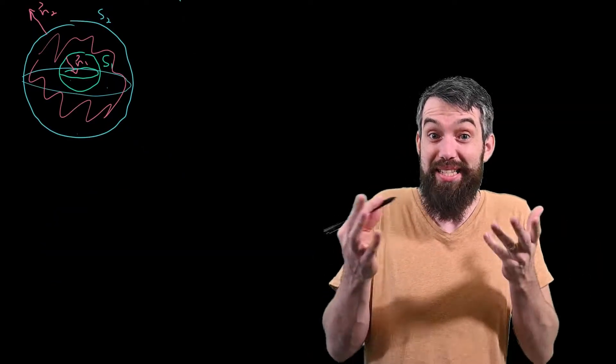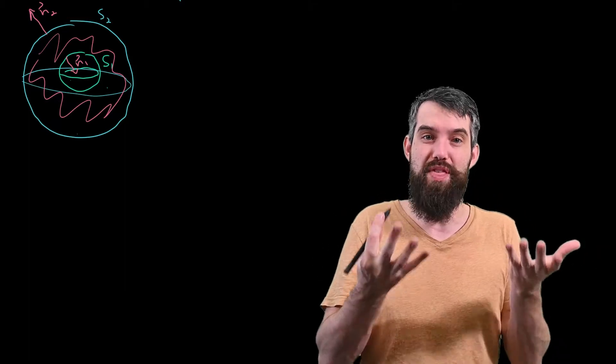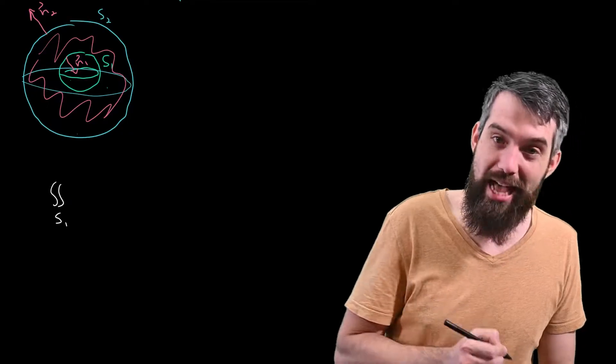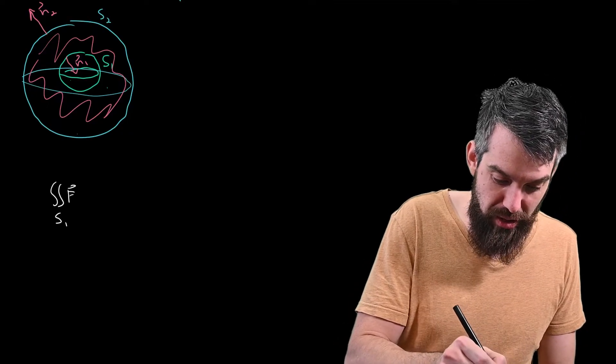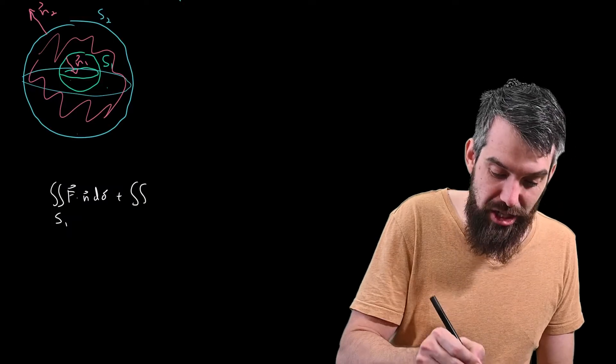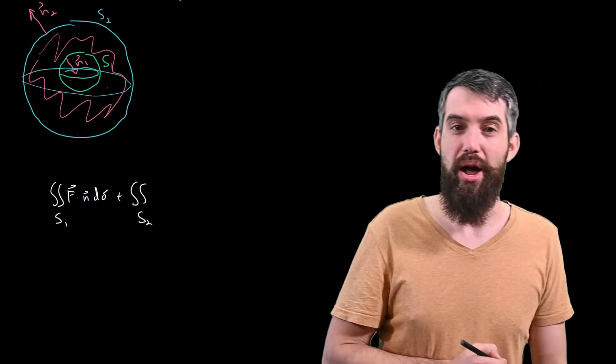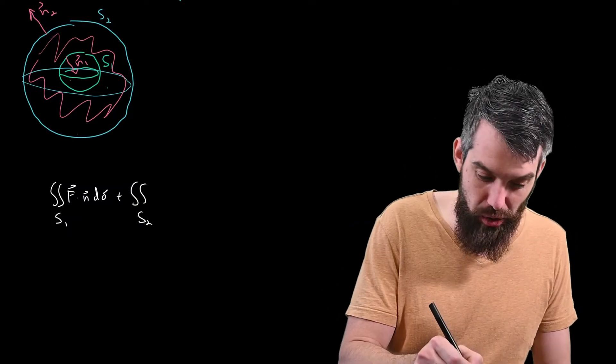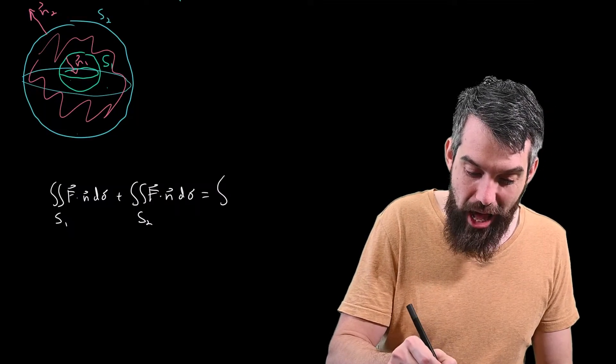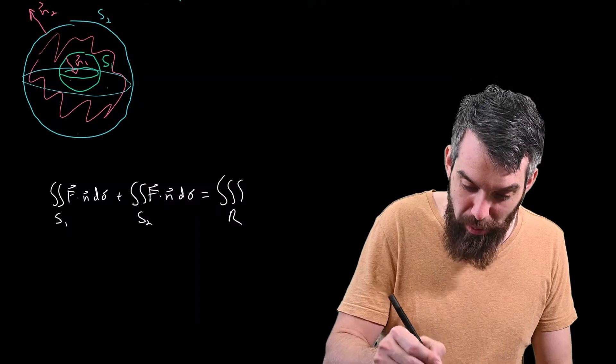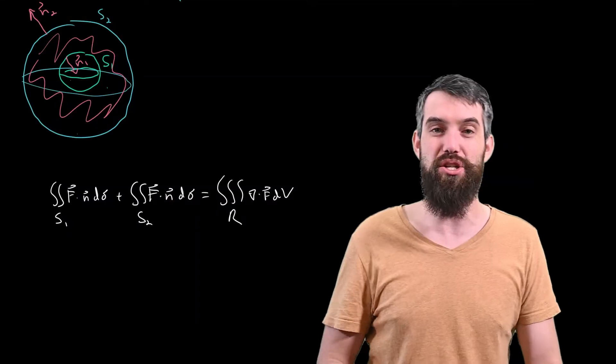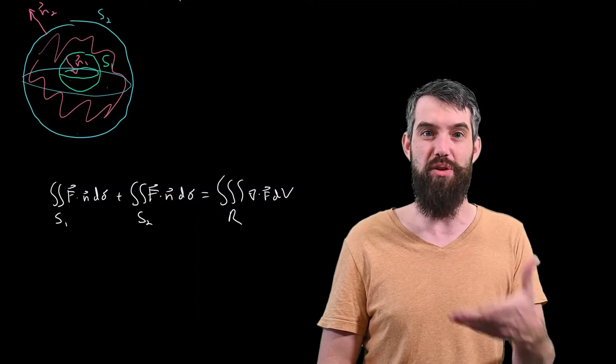So now I'll just restate the divergence theorem, breaking up the flux across the surface into the two different regions. I'll say that the surface integral over the S1 of F dot N dσ, added to the surface integral along the outside, the S2, of F dot N dσ. Well, that has to add up to the triple integral over the region of the divergence of F dV. That's our restatement of the divergence theorem in this context.